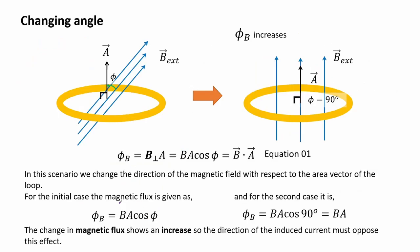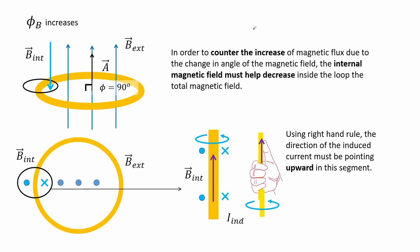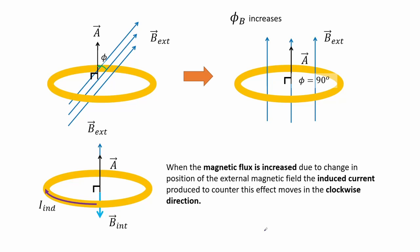In this scenario we change the direction of the magnetic field with respect to the area vector of the loop. For the initial case the magnetic flux is given by the flux equation with angle phi, and for the second case it is at maximum. The change in magnetic flux shows an increase, so the direction of the induced current must oppose this effect. The internal magnetic field must help decrease the total magnetic field inside the loop. Using the right hand rule, the direction of induced current must be pointing upward in this segment. The induced current moves in the clockwise direction.